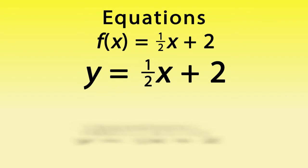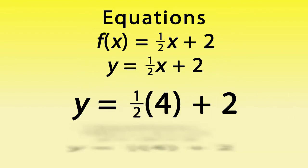You can find solutions for domain values simply by plugging in numbers for the domain variable X. If 4 was placed in the function, it would be f(4) equals one-half times 4 plus 2, or Y equals one-half times 4 plus 2.